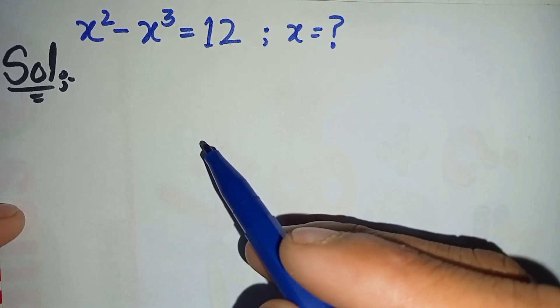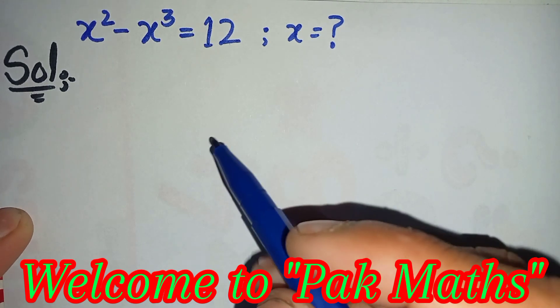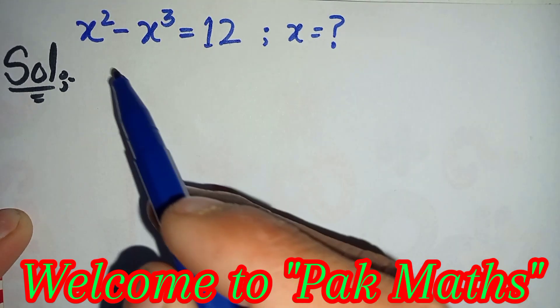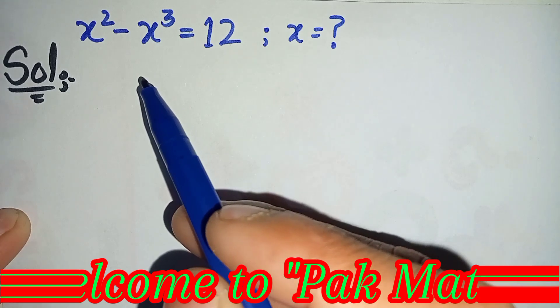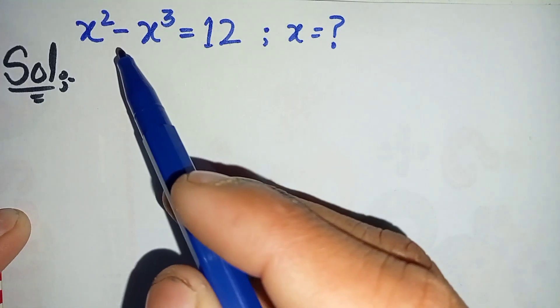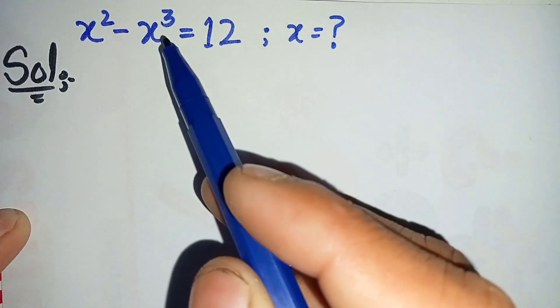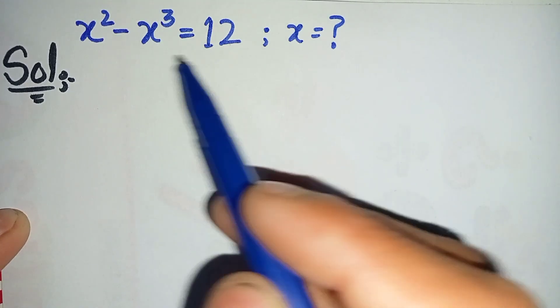Hello everyone, welcome to ParkMas. How to solve this equation: x squared minus x cubed is equal to 12.